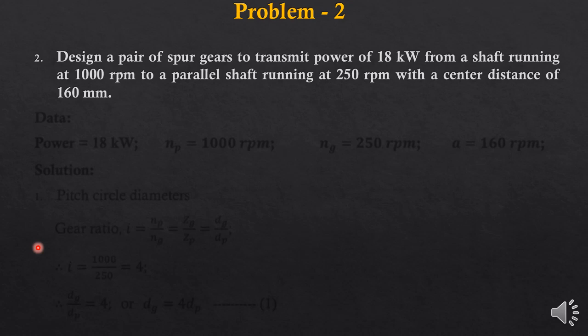There is very minimal data given in this problem, which suggests that we will have to make a lot of assumptions as we go through the design process. The interesting things to note are: parallel shafts, hence we use spur gears; power is 18 kW; pinion speed is 1000 rpm; gear speed is 250 rpm; and center distance is limited to 160 mm.